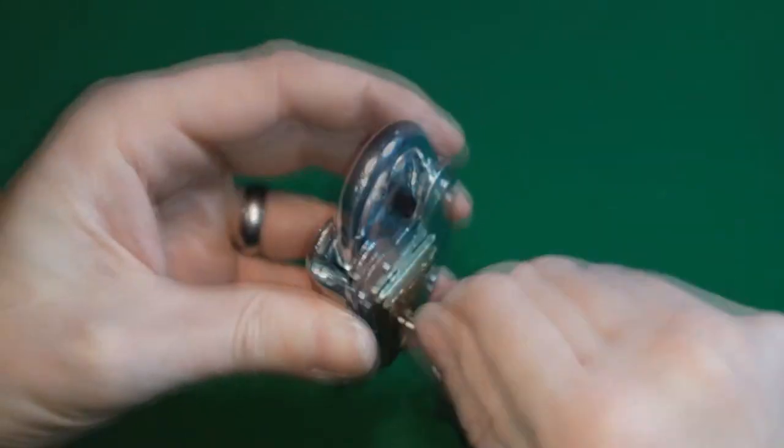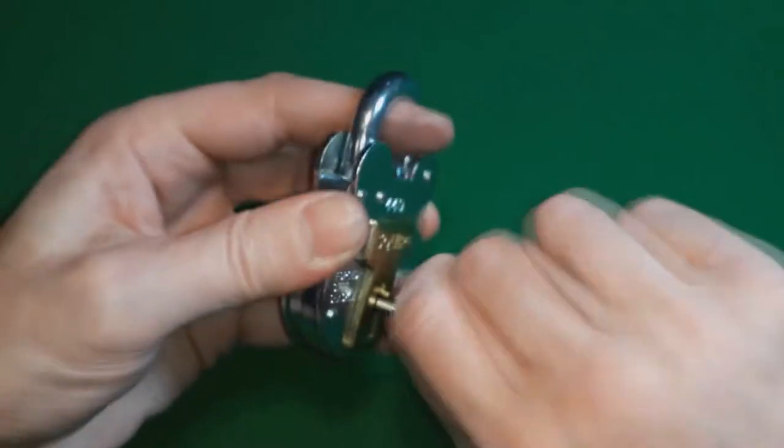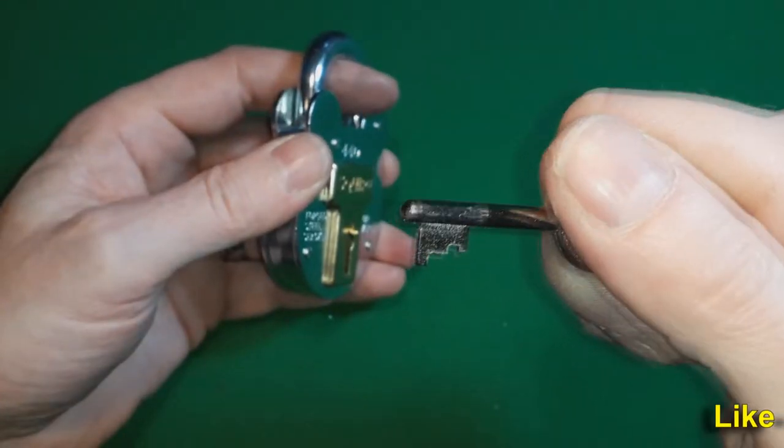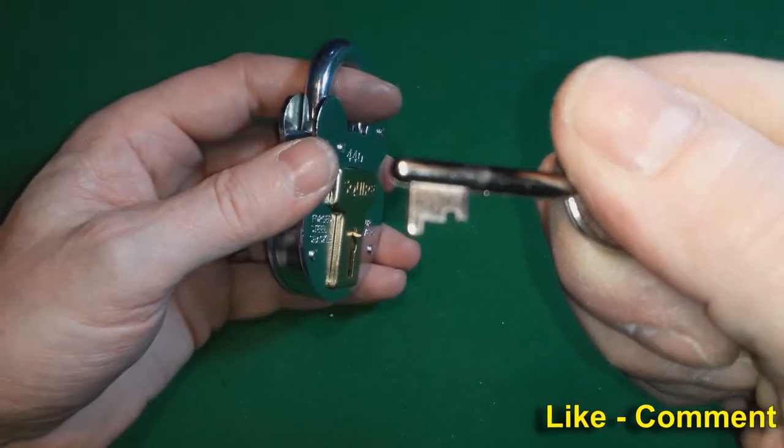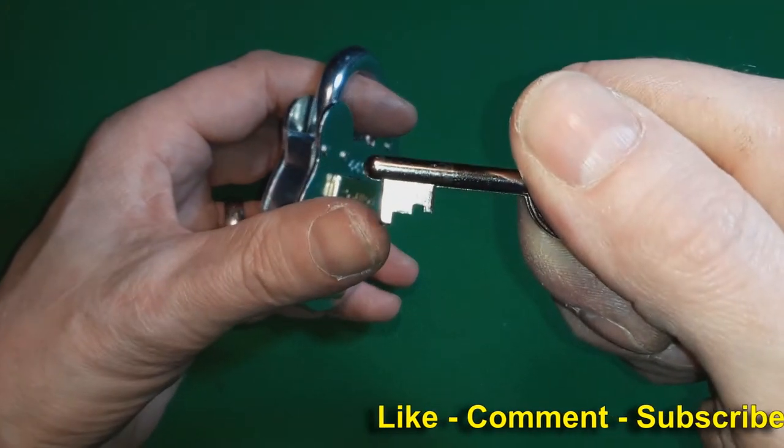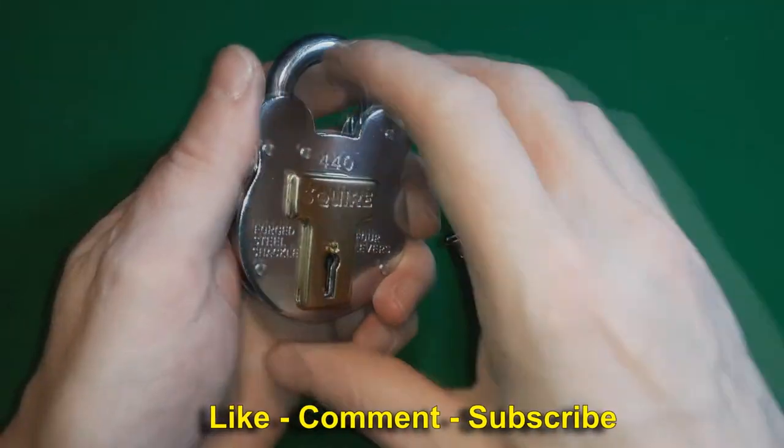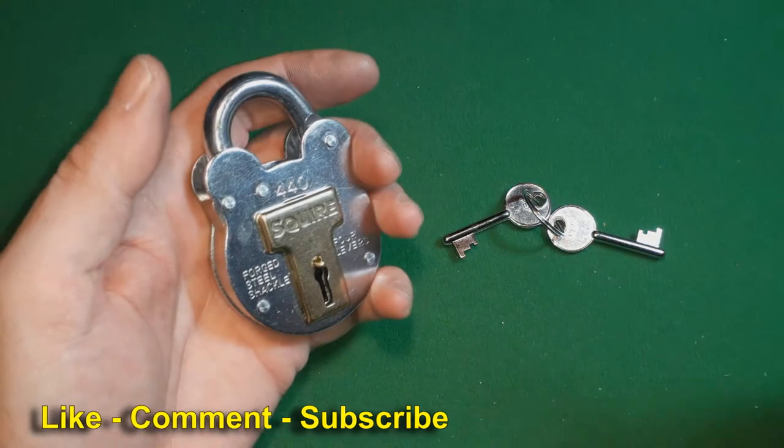So we need to lock this up. There's a key bitting. Obviously the very end one here is the one that catches the bolt. How am I going to pick this? Well,